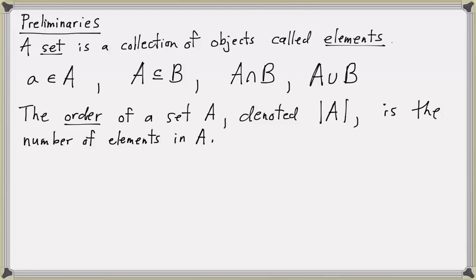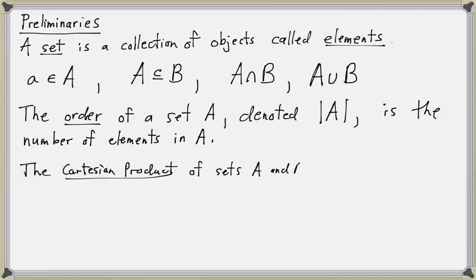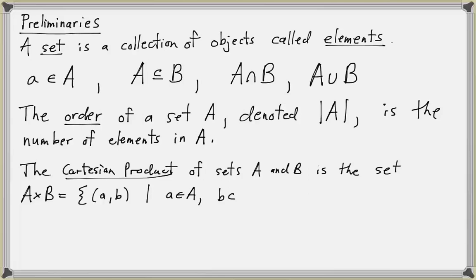Given two sets A and B, we can take the Cartesian product of the two sets. The Cartesian product of sets A and B is the set defined by A times B. It's a set of ordered pairs where the first coordinate is in A — the set of all ordered pairs (a, b) such that a is in A and b is in set B.